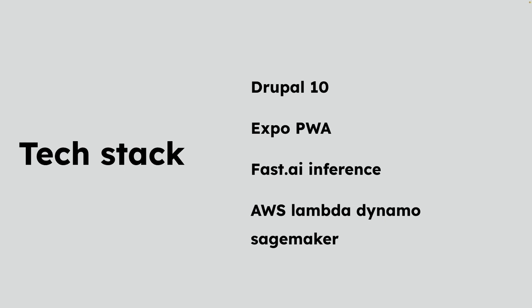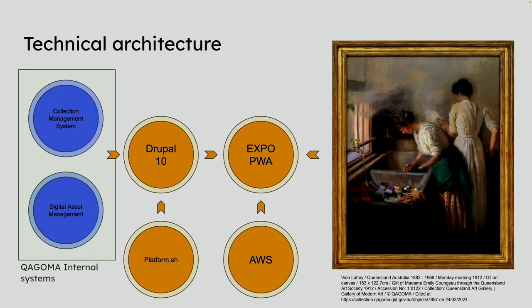Now I'm going to go behind the scenes — what is it built with? Effectively, we have a collection management system and digital asset management system that feeds into a Drupal 10 site hosted on Platform. Then there's an Expo progressive web app, which is a React Native opinionated framework. You take a photo of a painting, it hits AWS — an API endpoint that hits an inference engine that finds the most likely match to your artwork, sends an ID back, you go to Drupal, get all that information, and you have your result.